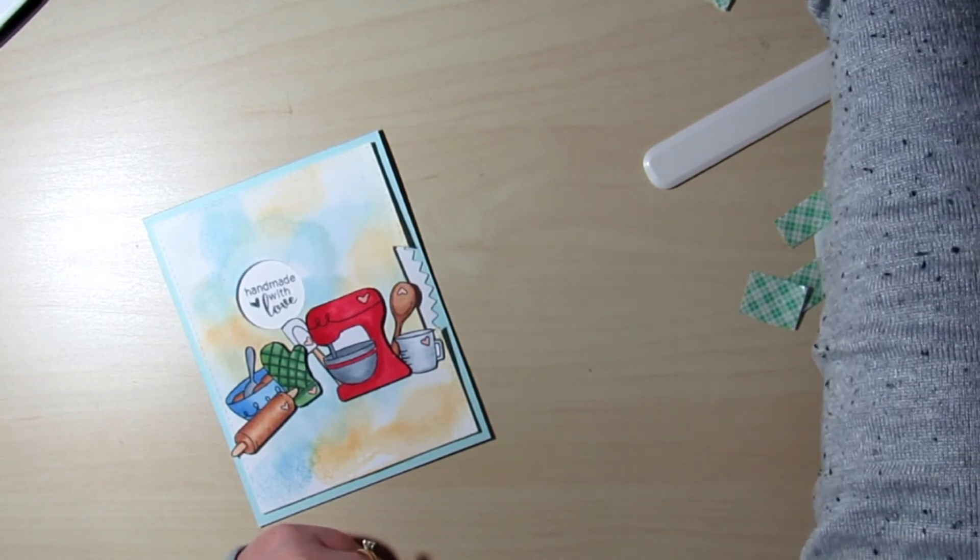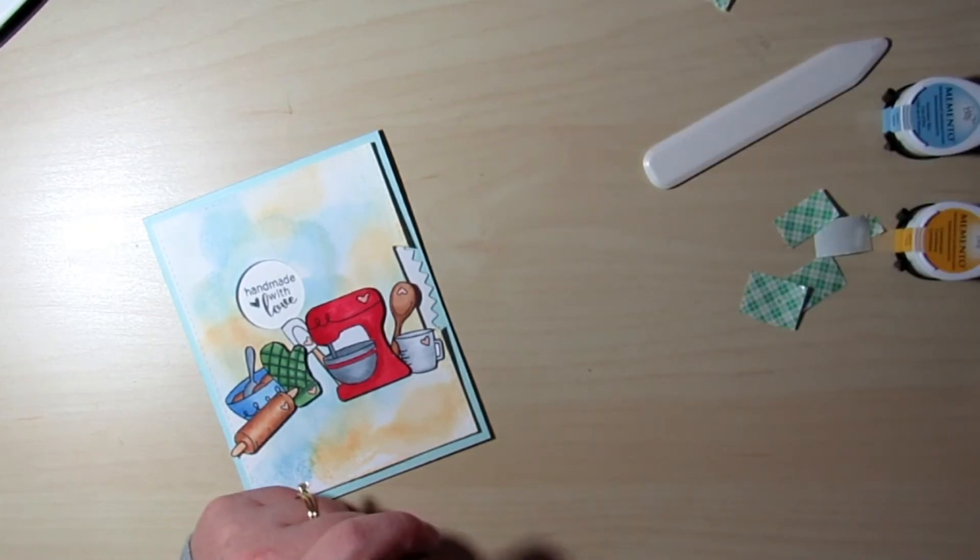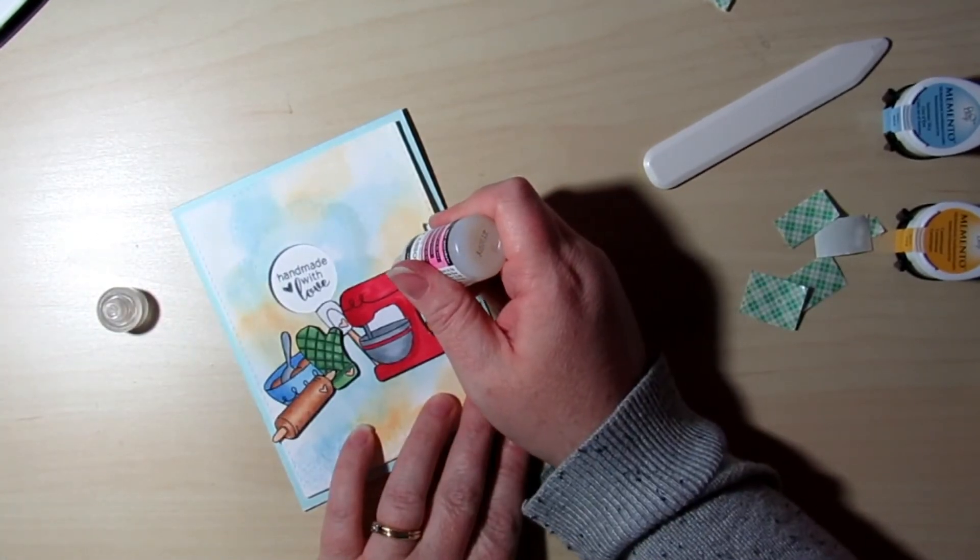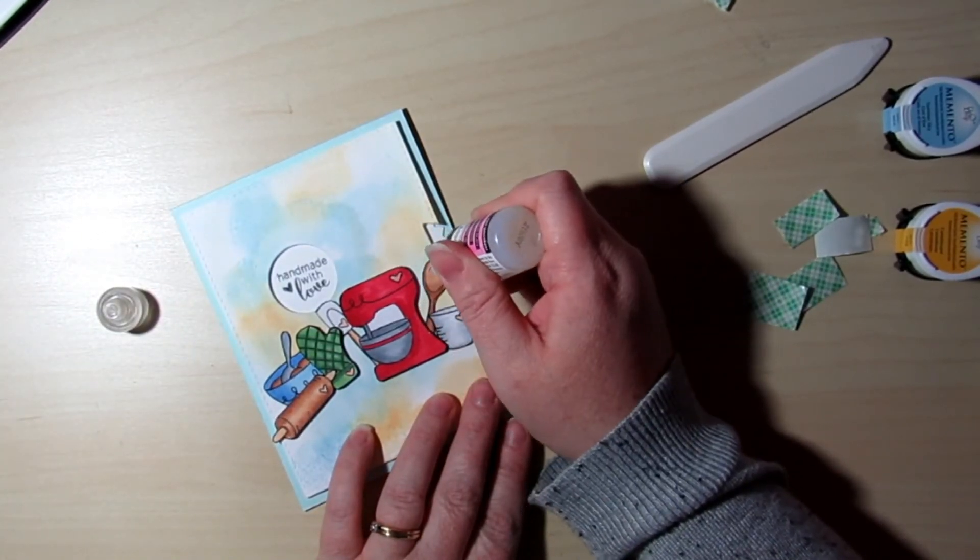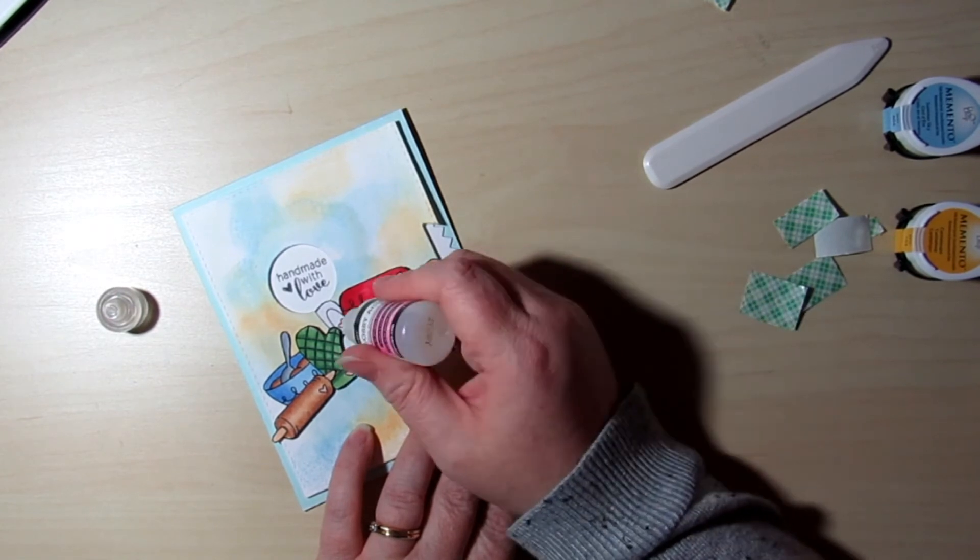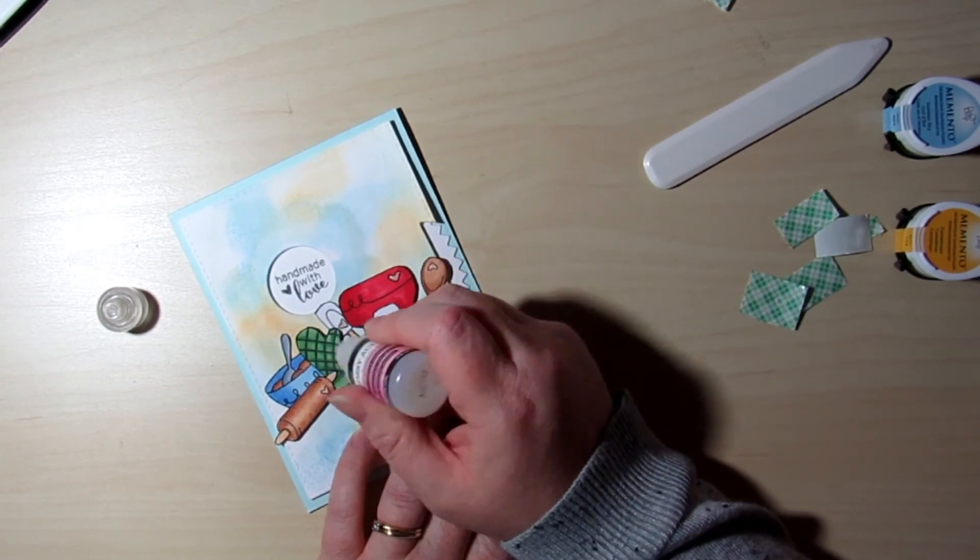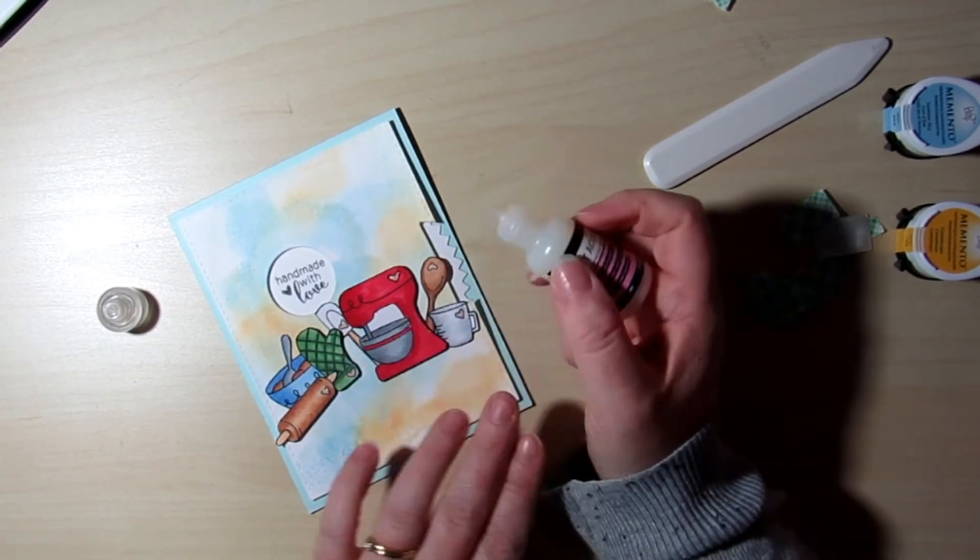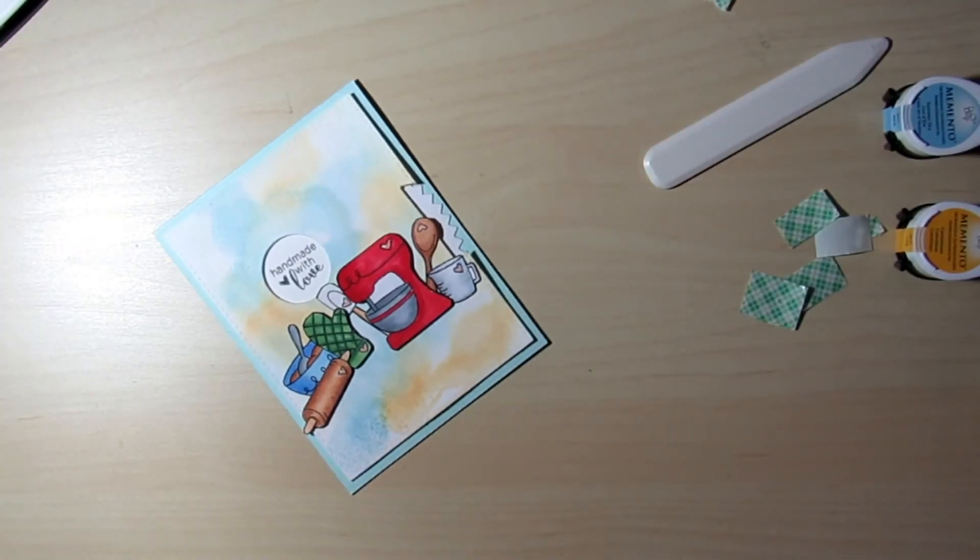So of course no card is complete without adding some finishing touches. So we are adding some glossy accents to all of the little hearts on all of our little images here. There's a little heart on almost all of them, so I added some glossy accents to all of those.